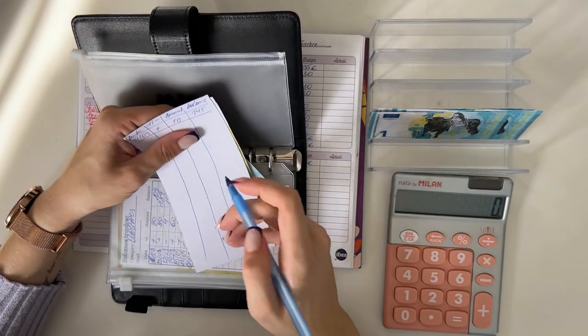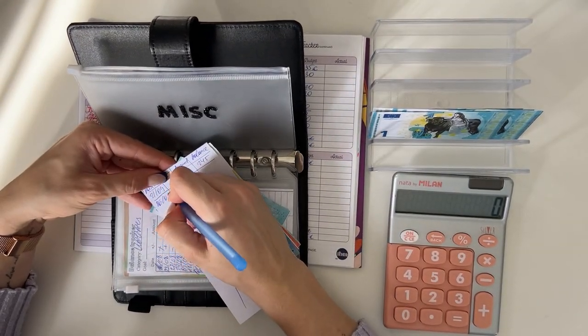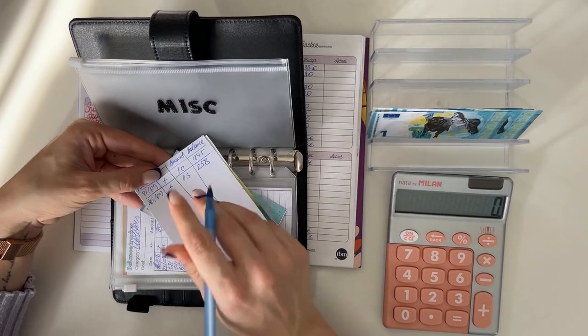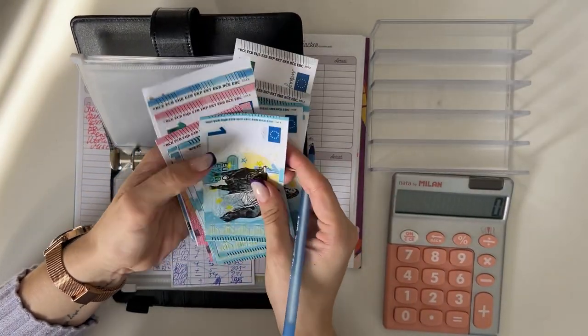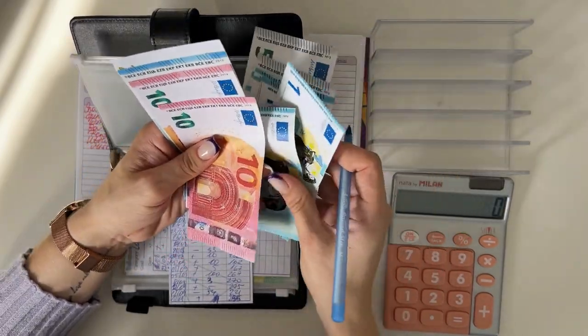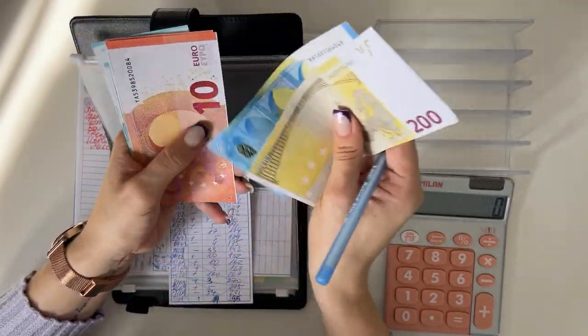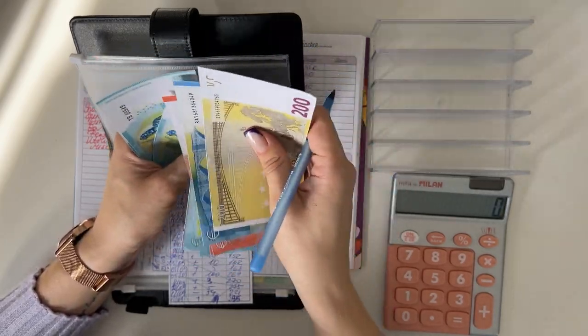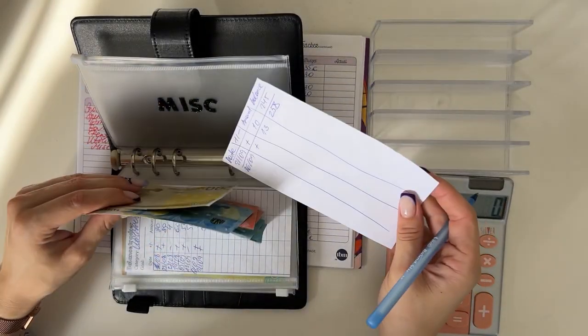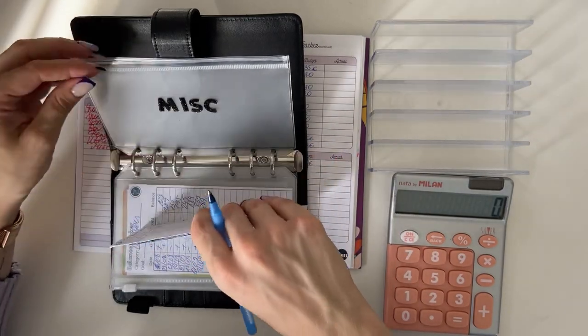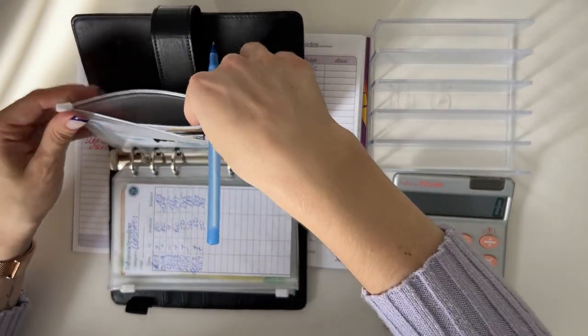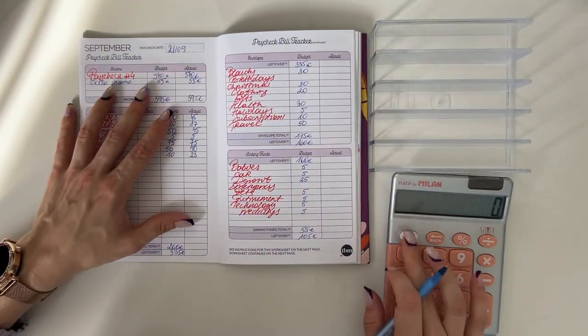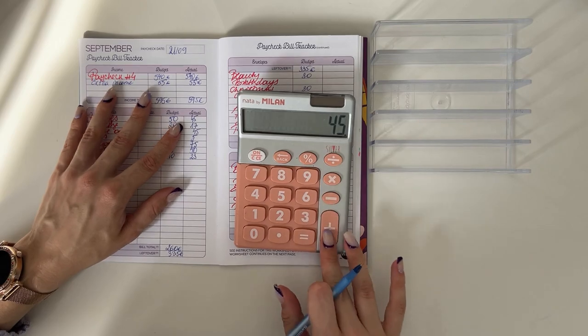So we're adding, and it should be $258 here now. So let's count and see. We have $220, $230, $240, $245, $250, $251, $252, $253, $254, $255, $256, $257, and $258. Yes, $258 perfect. That's for miscellaneous, and now let's count the actual amounts.